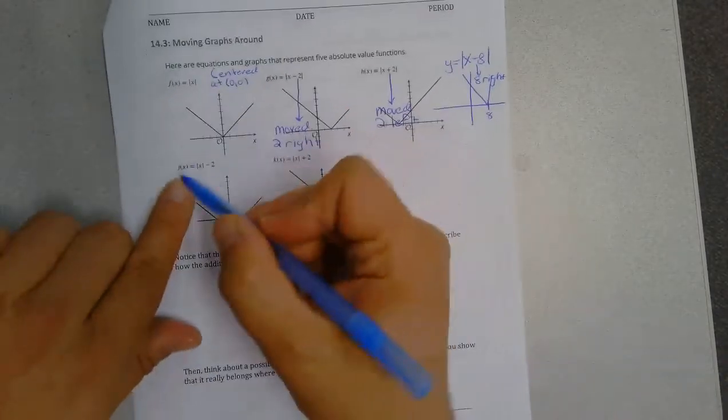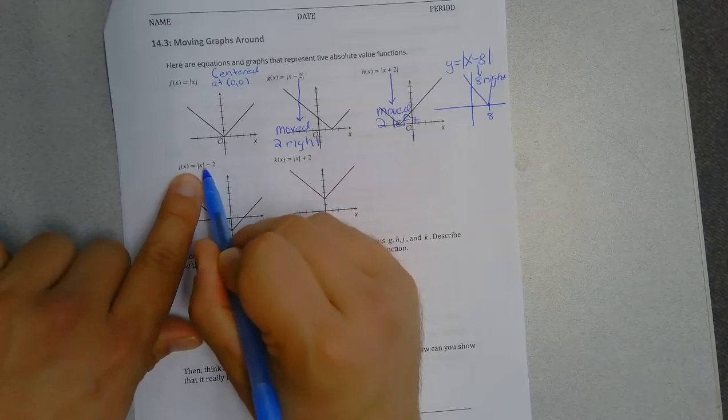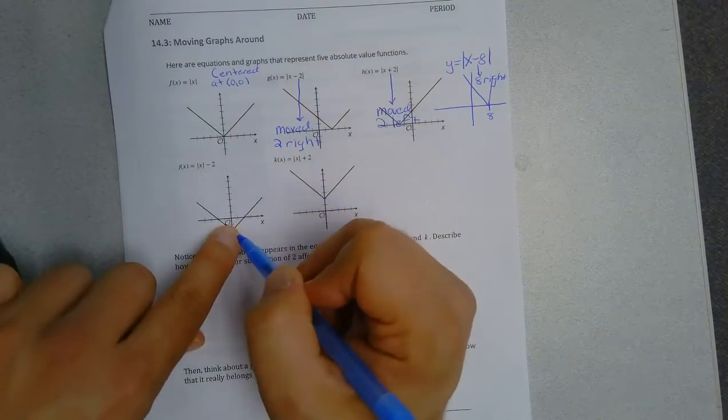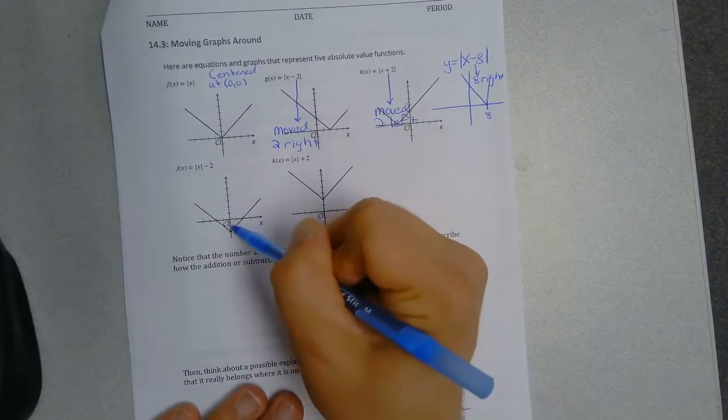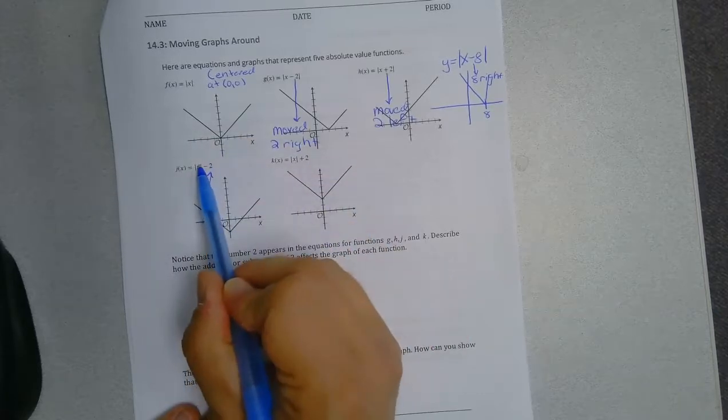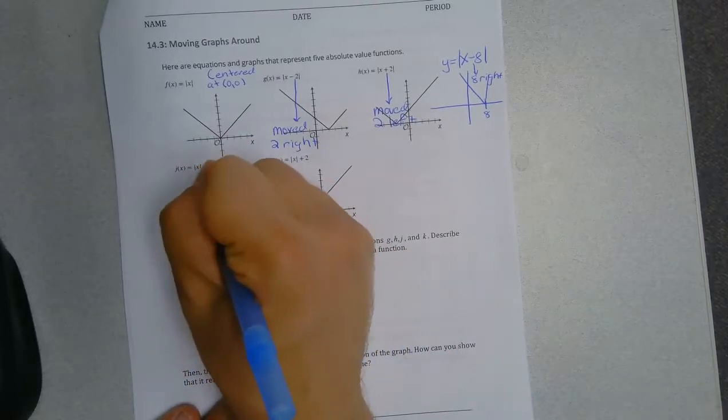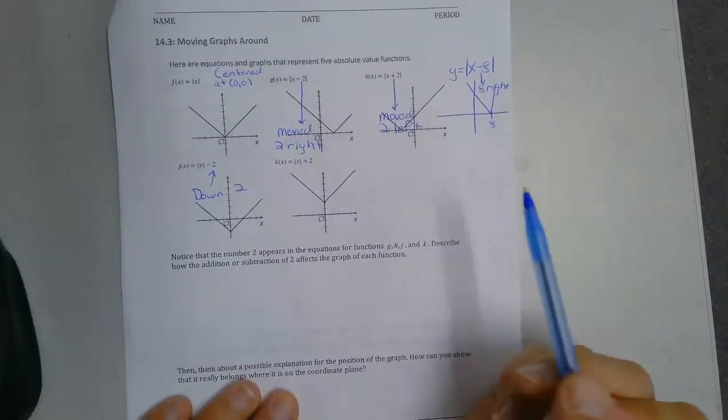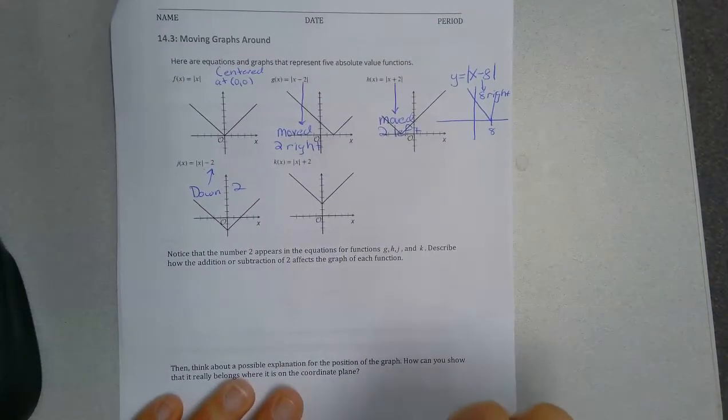However, if I don't do an operation inside the parentheses or inside the absolute value to the x and I subtract two, look, it moved that function down two. So subtracting two not in the absolute value moved it down two. And adding two moved it up two.